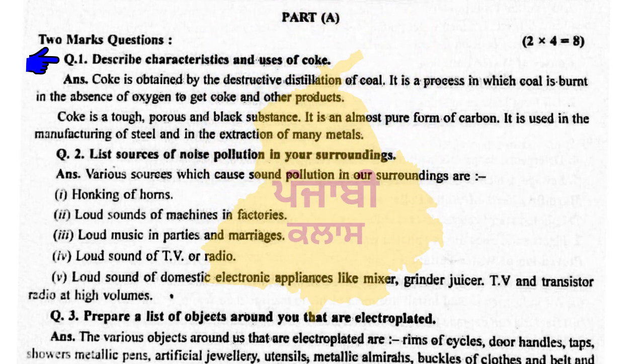Part A. Two marks question. Question number one: Describe characteristics and use of coke. Coke is obtained by the destructive distillation of coal. It is a process in which coal is burnt in the absence of oxygen to get coke and other products. Coke is tough, porous and black substance. It is an almost pure form of carbon. It is used in the manufacturing of steel and in the extraction of many metals.